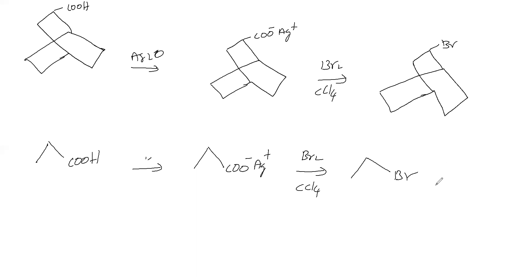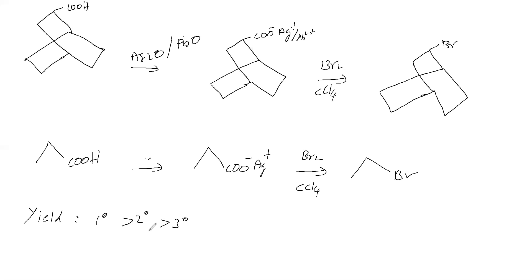In the Borodyne-Hansdecker reaction, the yield order is: primary > secondary > tertiary. Chloroalkanes give a low yield in this method, so this method is best for preparing Bromoalkanes.